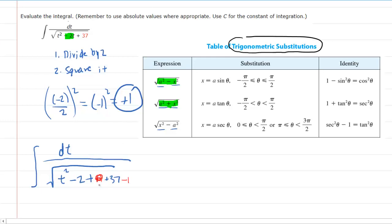In other words, this plus one and this minus one, when you combine them, are actually zero. So in effect, you haven't changed the expression.